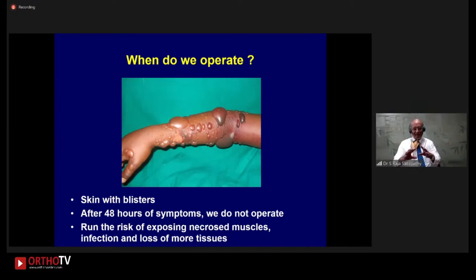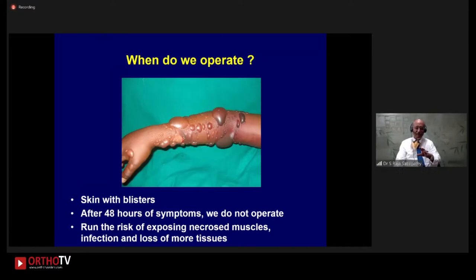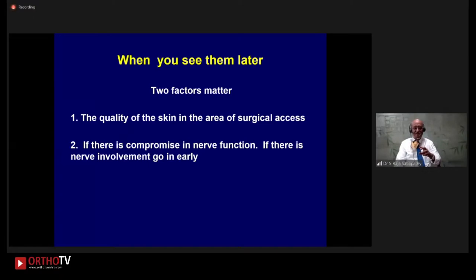When do we operate? Suppose someone comes with blisters — this is part of acute compartment syndrome. If you have skin with blisters, the skin is compromised. When they reach us after 48 hours, we don't operate. If you operate, you run the risk of exposing necrotic muscles; muscles without blood supply get infected and become necrotic, you lose the nerves, and you lose long segments of nerve. By opening a patient's forearm, we run the risk of losing more tissues. So what you really want is to treat it conservatively, allow it to settle down, and about a couple of months later, start doing things.